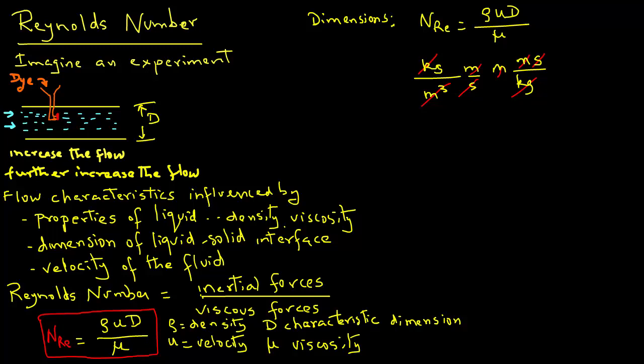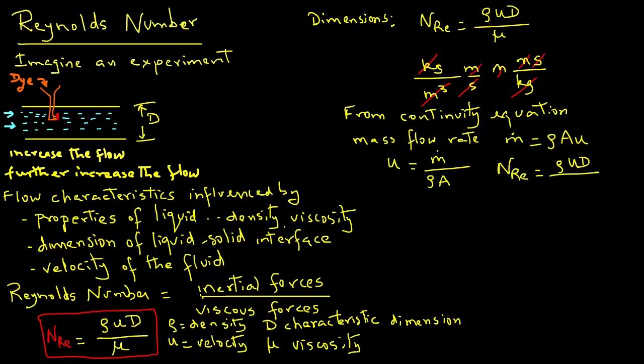Now, we can also express Reynolds number in a slightly different manner. Note that from continuity equation, m dot equals rho, which was density, times area, times velocity u. So, we can write u equals m dot over rho a. Now, we can substitute this u, the velocity, the average velocity u, in Reynolds number. Reynolds number was rho u d over mu, and if we substitute for u, we have rho m dot over rho a, d over mu, then rho and rho will cancel out, and we are left with m dot d over a mu.